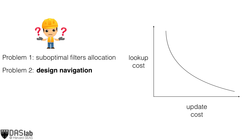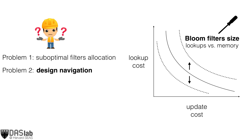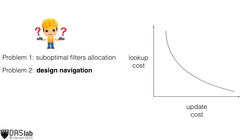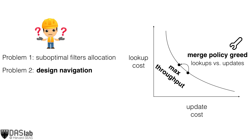The second problem is design space navigation — how do we strike the best balance between update cost, lookup cost, and main memory for a particular application? For instance, what would be the precise impact of decreasing or increasing the amount of main memory in the system? Or, how can we find the best balance between lookup cost and update cost that maximizes throughput for a particular application?